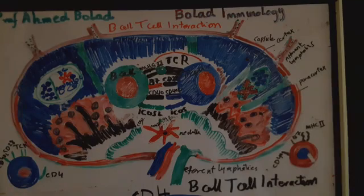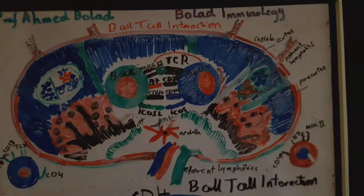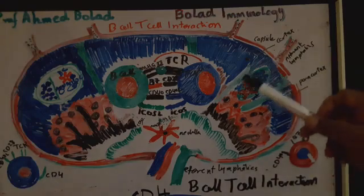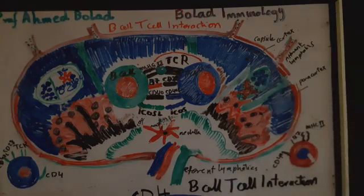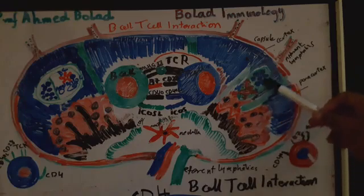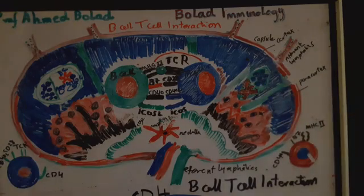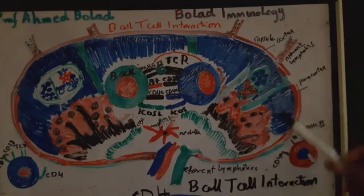B-cells, following their maturation in the bone marrow, patrol the body and enter secondary lymphoid organs — the spleen and lymph nodes — where they concentrate in the B-cell follicles within the cortex of the secondary lymphoid organ.